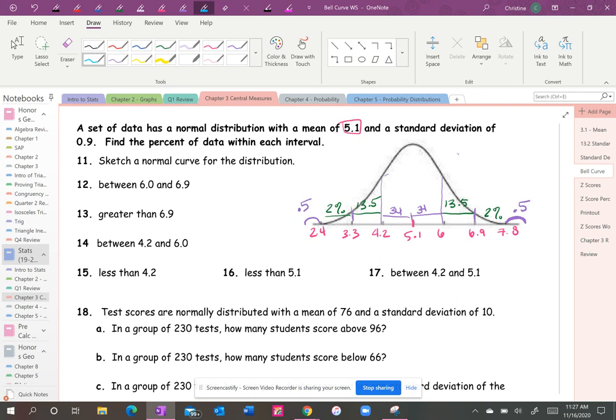All right, so they want to know what percent of the data is between these two numbers, so between 6 and 6.9. Now you're just reading the graph, it would be 13.5. Greater than 6.9 would be 2 percent, and don't forget we put the 0.5 here, so 2.5 percent. Between 4.2 and 6, that's 68 percent. Less than 4.2 is going to be everything here: 13.5 plus 2 plus 0.5, so that's 16 percent.